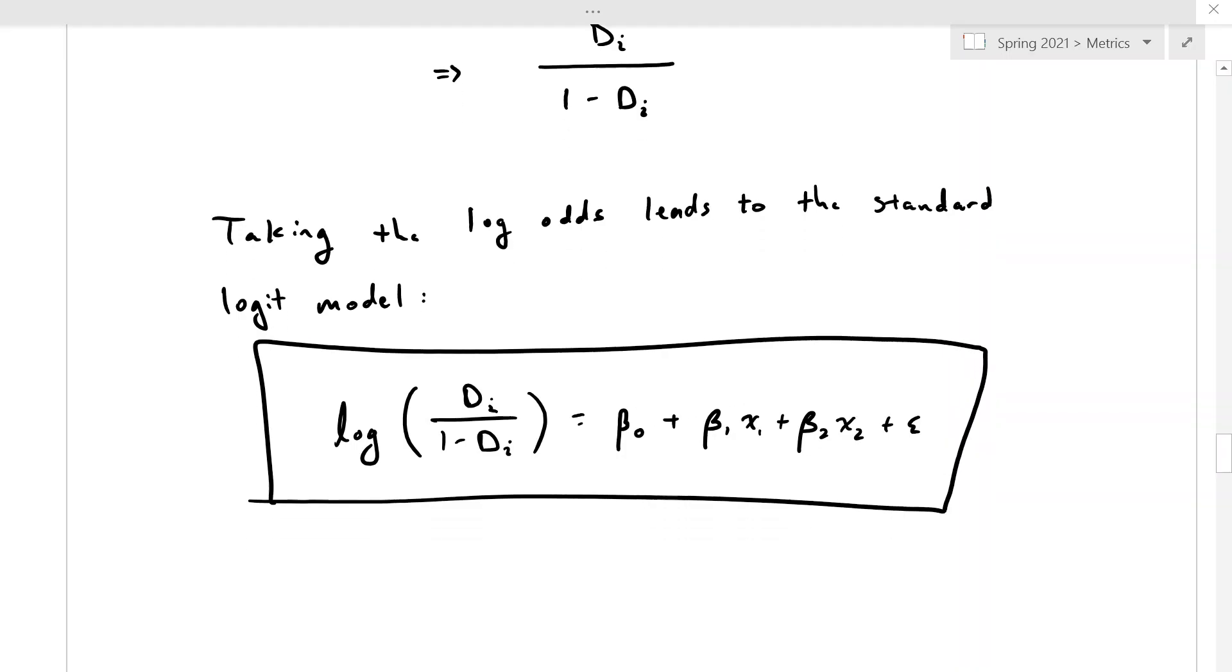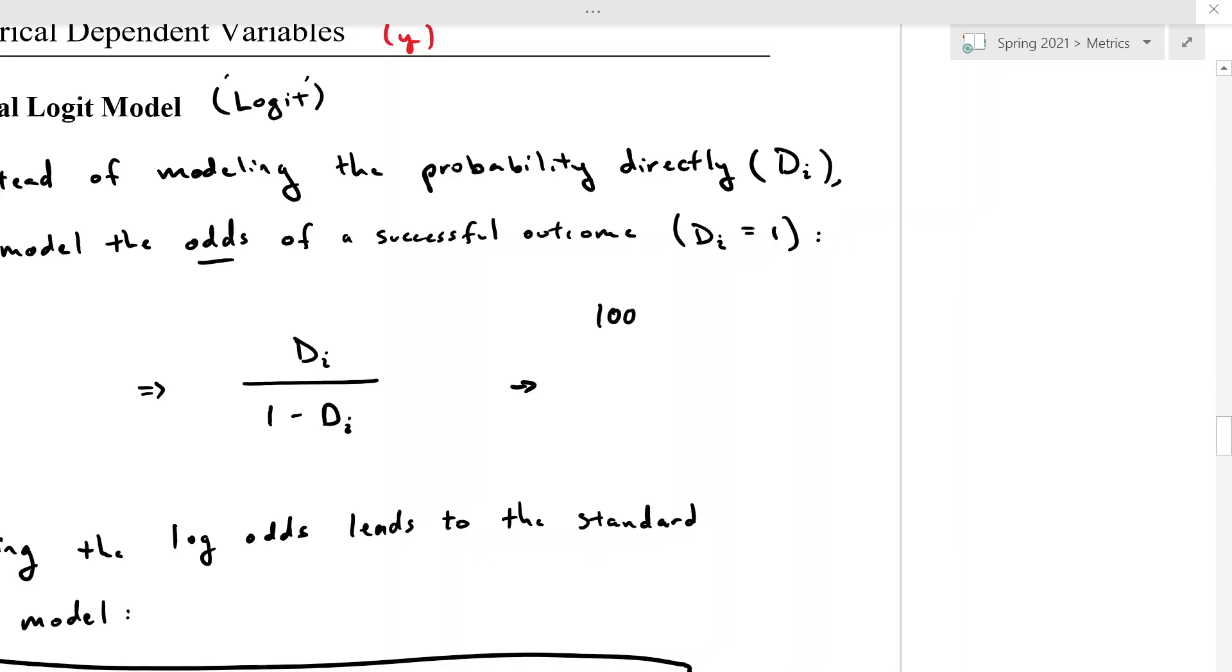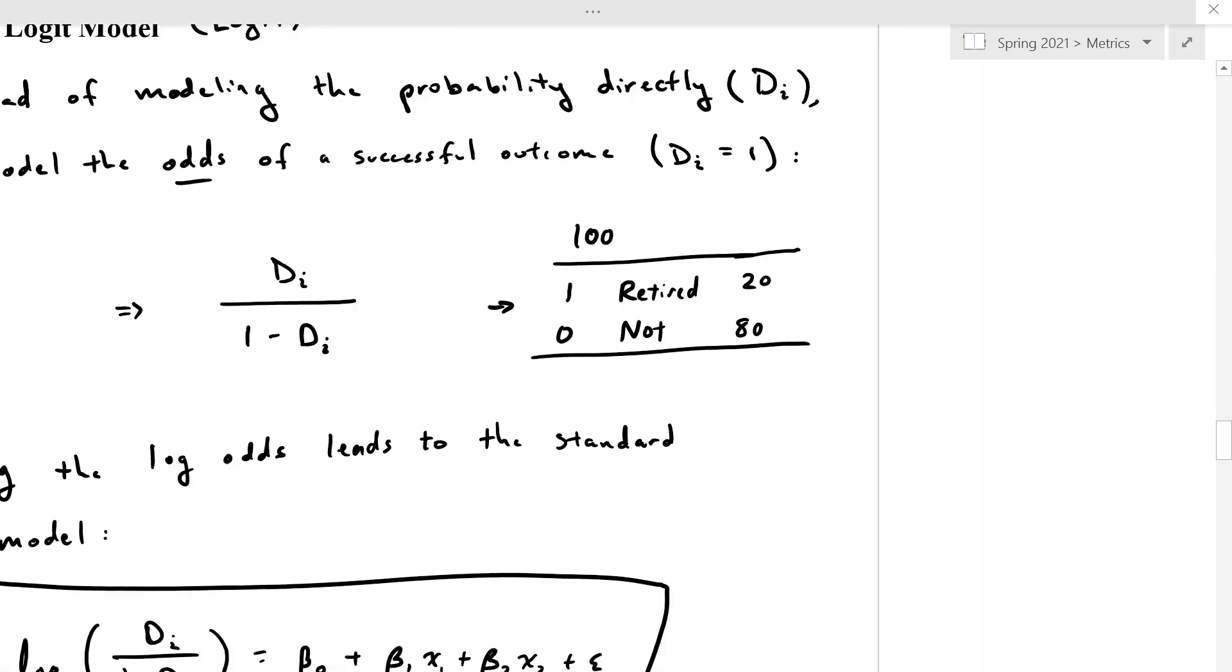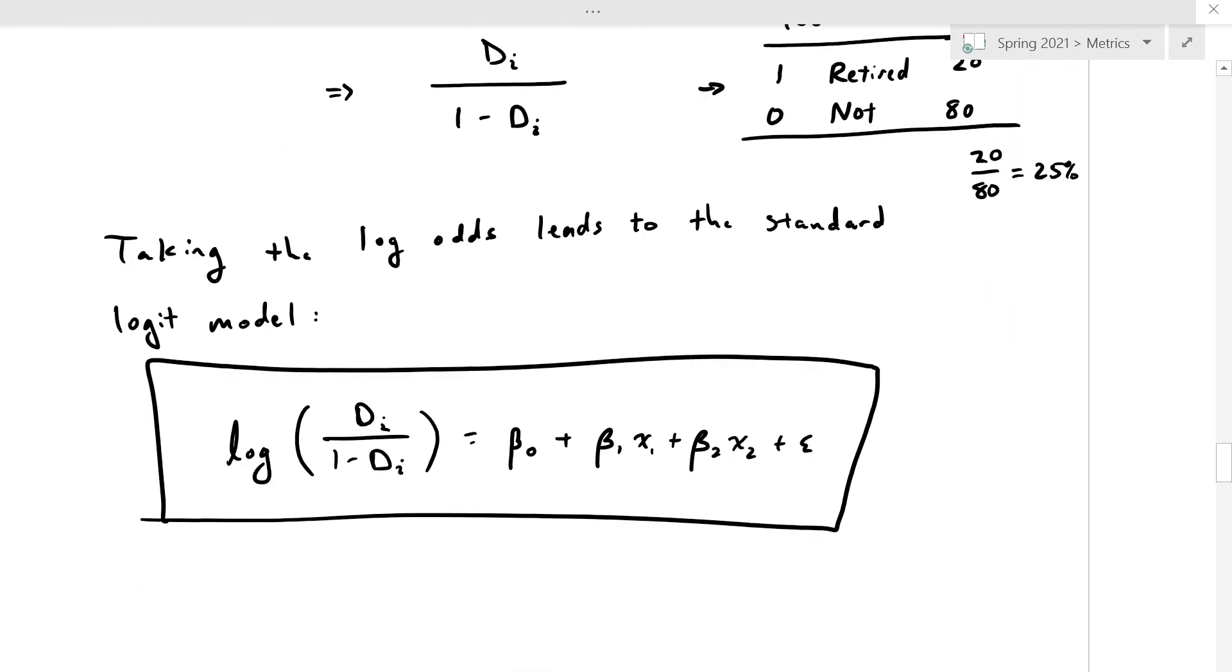And just to maybe give a little example to this odds bit, let's say that we wanted to model what factors lead to somebody retiring. And so if you had 100 people, and 1 means you're retired, 0 means you're not, and let's say you had 20 people who were retired in your sample and 80 people who were not, then you're going to have 20 over 80 for 25%. So anyway, that's how we're going to be calculating our log odds.